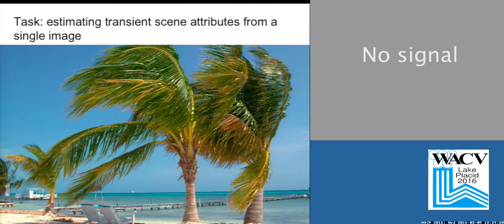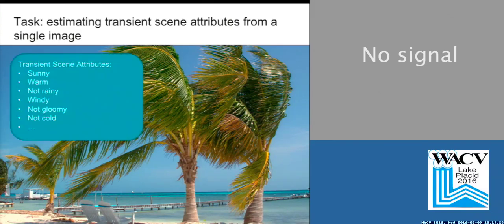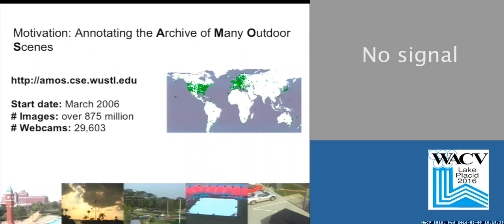We addressed the task of estimating transient scene attributes from a single image. For this image, the attributes might be sunny, it's warm, it's not rainy. If you were paying close attention, you might have seen that it was windy. It's not gloomy and it's not cold. So this is the task that we're trying to address. The motivation behind this is that there are many potential things that you could do if you could accurately estimate the local illumination and weather conditions in a scene.